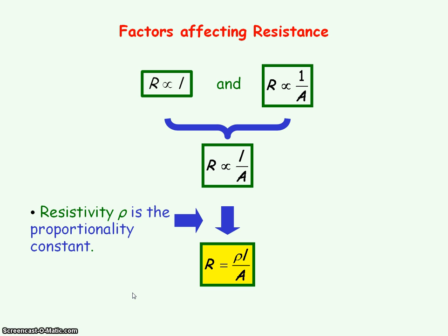The resistance of the wire is also affected by temperature, and this is captured through the resistivity value. Different temperatures give different resistivity values for a metal — the higher the temperature, the larger the resistivity value, and hence the higher the resistance.